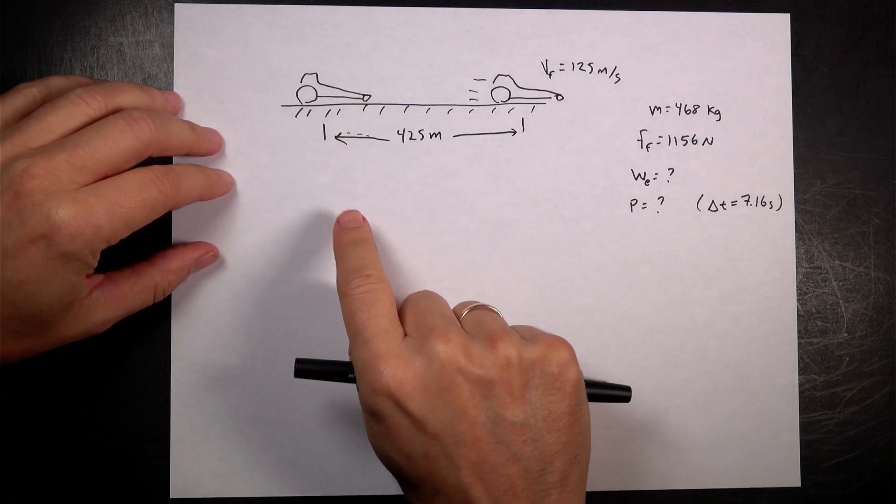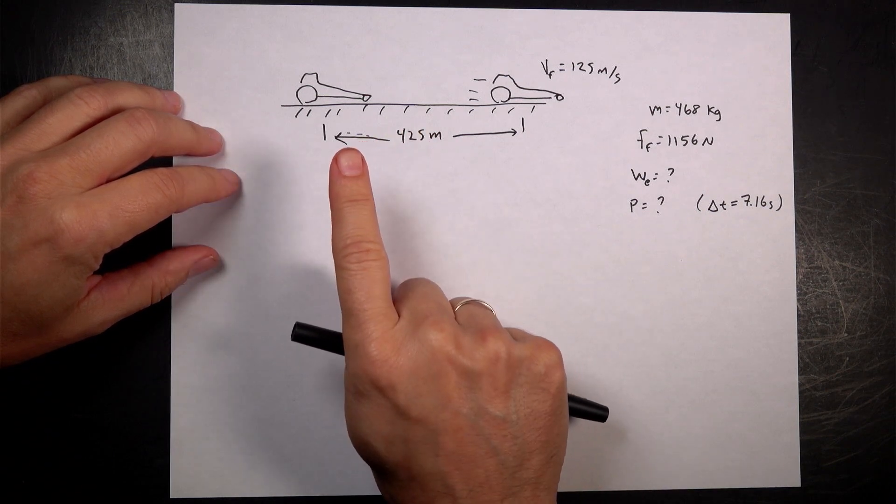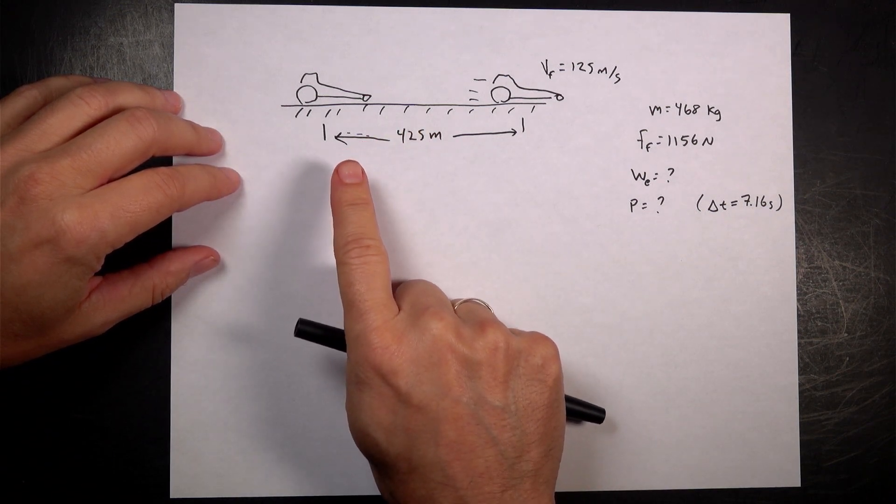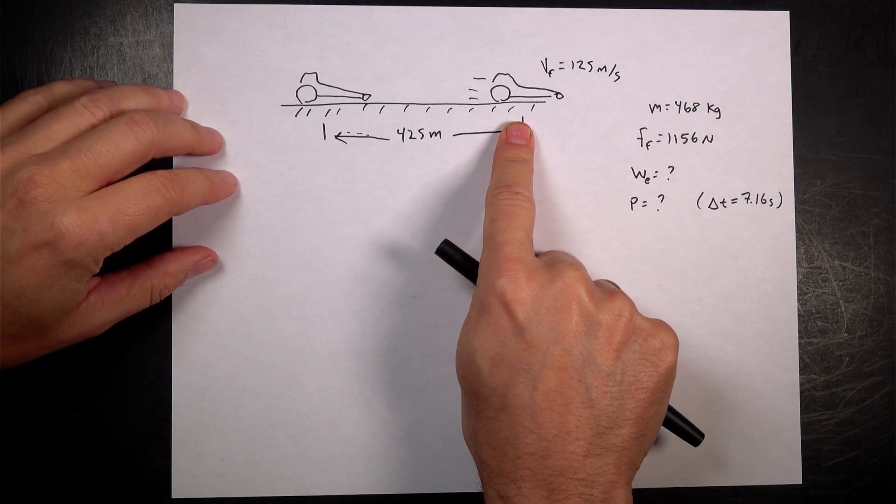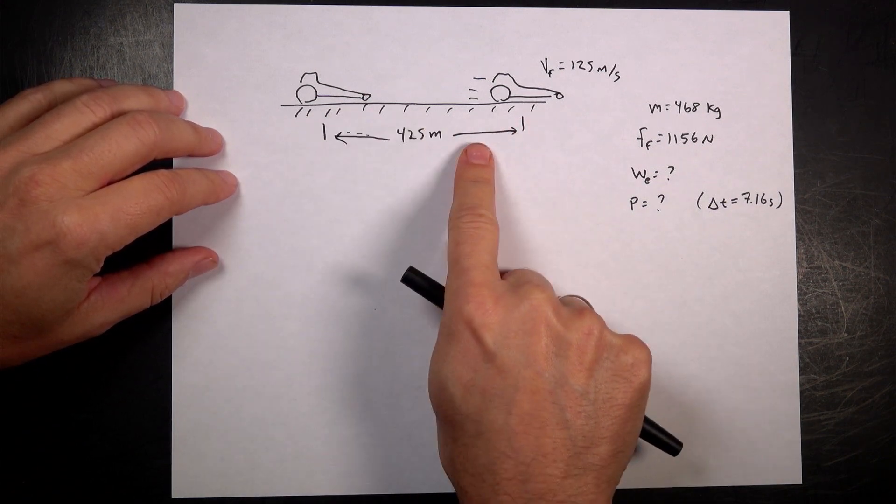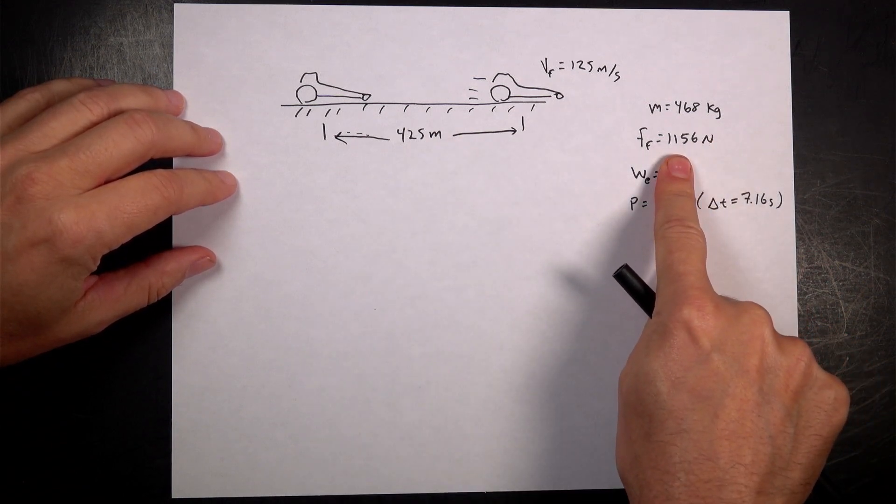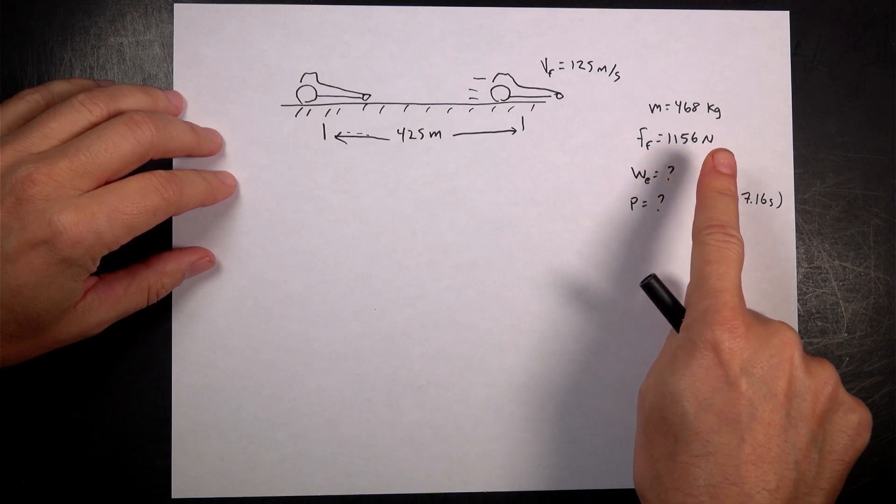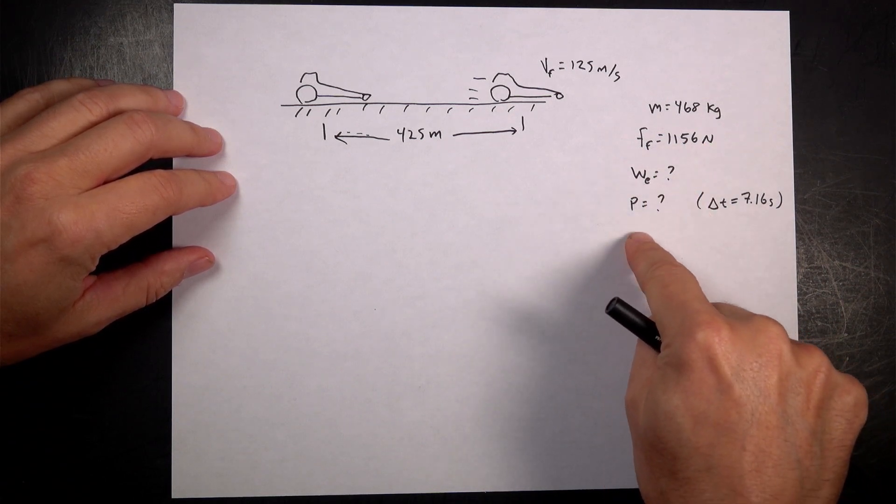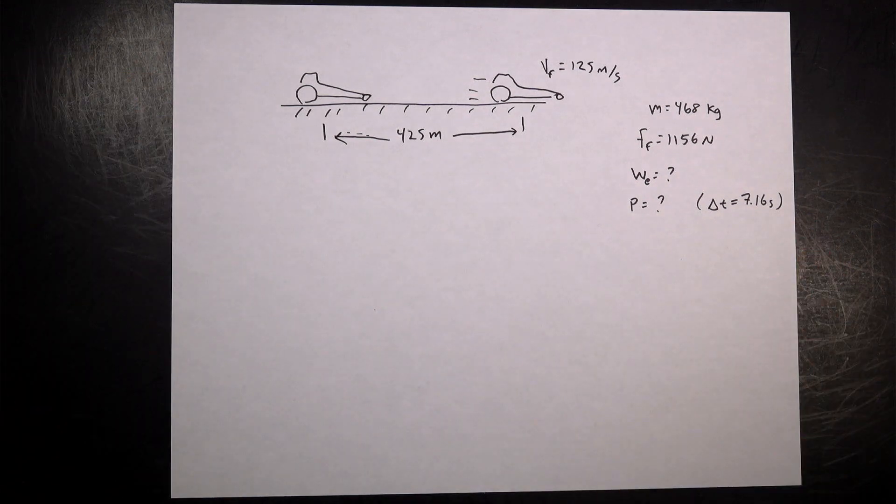So this is the problem. It says, I'll read it exactly: A dragster with a mass of 468 kilograms accelerates from rest to a final speed of 125 meters per second in 425 meters. I drew my nice little picture there. And it encounters an average frictional force of 1,156 newtons. What is the work done by the engine? And B, what is the power output of the engine if it takes 7.16 seconds?